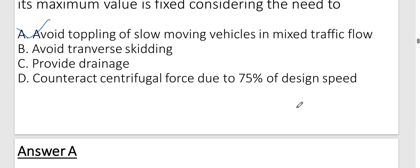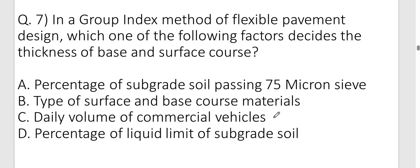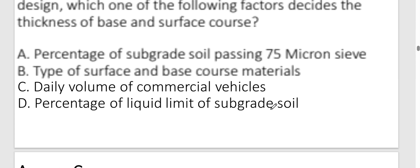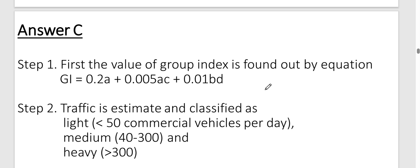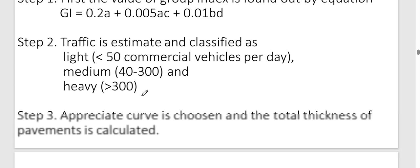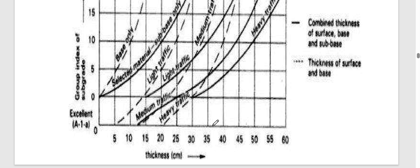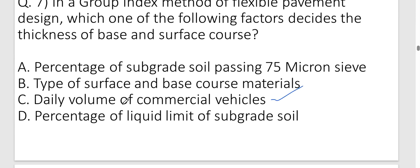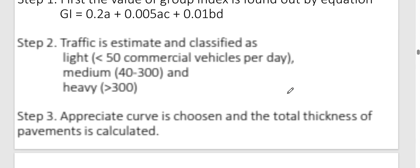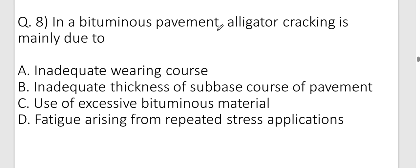Question seven: In the group index method of flexible pavement design, which factor decides the thickness of base and surface course? The answer is option C — daily volume of commercial vehicles. In the group index method, thickness is determined from a graph of thickness versus traffic, so it is directly related to the daily volume of commercial vehicles.